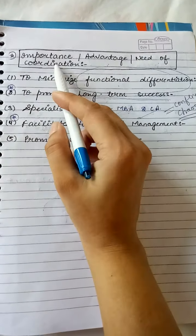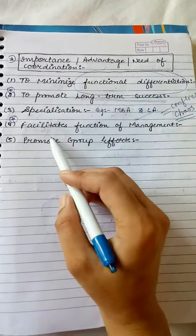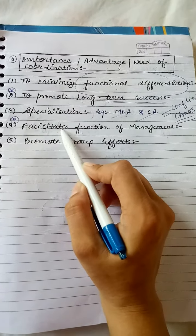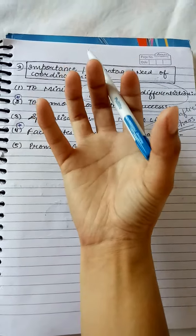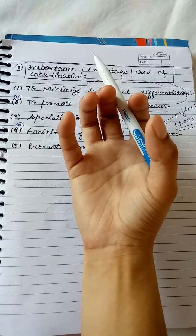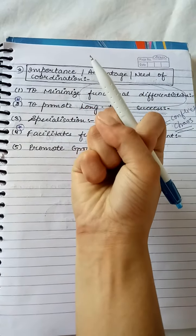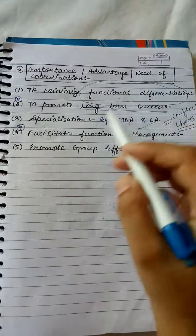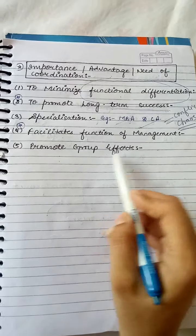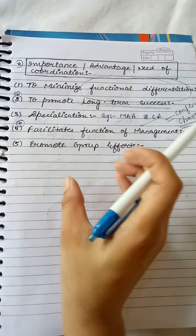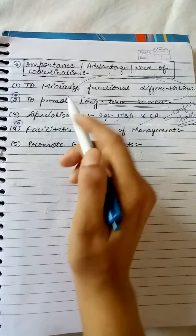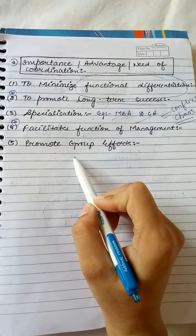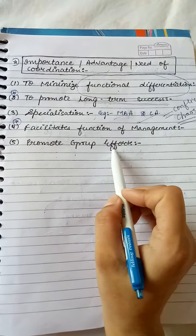Another reason why we are saying that coordination is important is it facilitates the function of management. As we said, coordination acts as a receptor which denotes the functions of management, binds them together, and ensures everyone works in a coordinated manner. Last is promote the group efforts. By synchronizing the activities of different departments, coordination ensures that group efforts are promoted in the organization. Everyone works together.